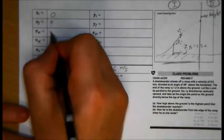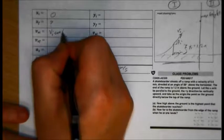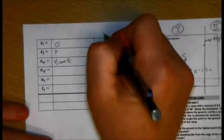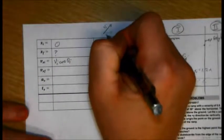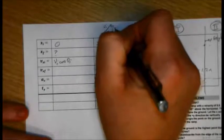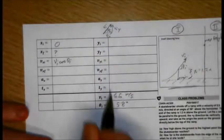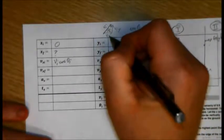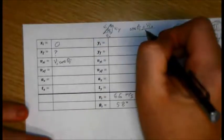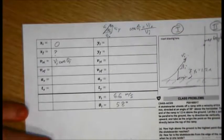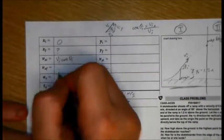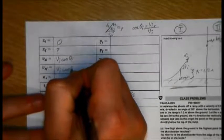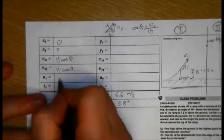Vx initial is vi cosine theta i. Why? Well because if you have v initial, v initial x, v initial y and we're given theta i, cosine of theta initial is adjacent vix over hypotenuse vi so I can solve for vix like so. The final velocity in the x direction is vi cosine of theta initial which is the same thing because the acceleration is zero.